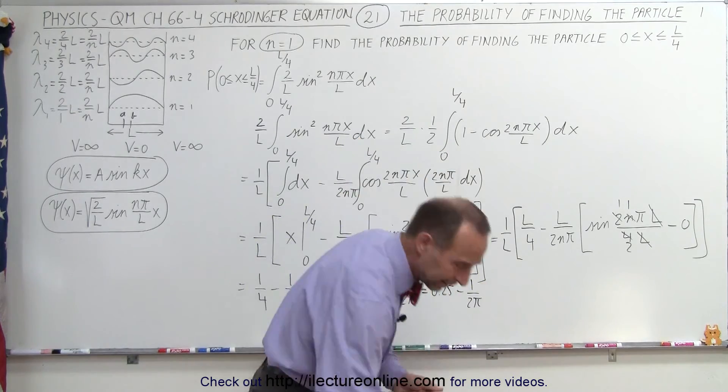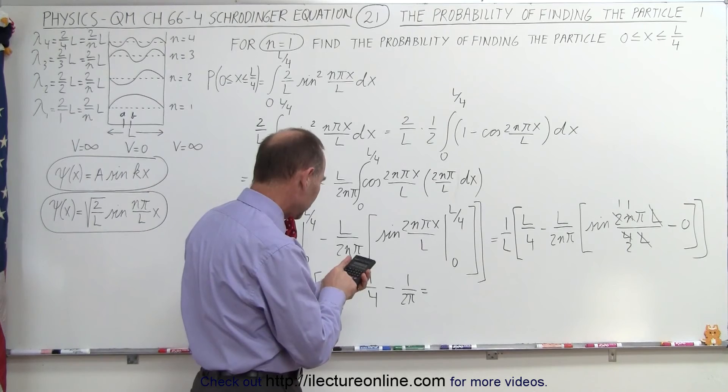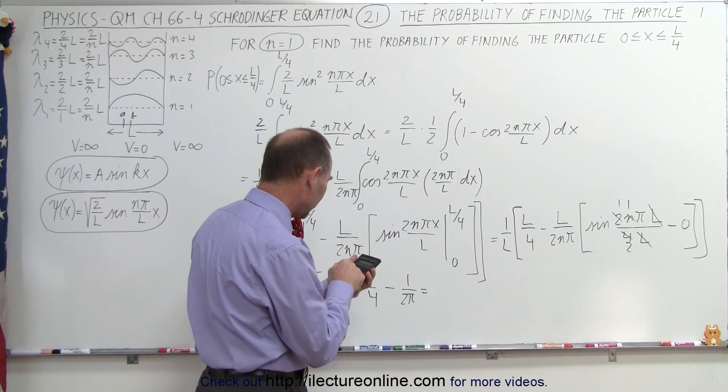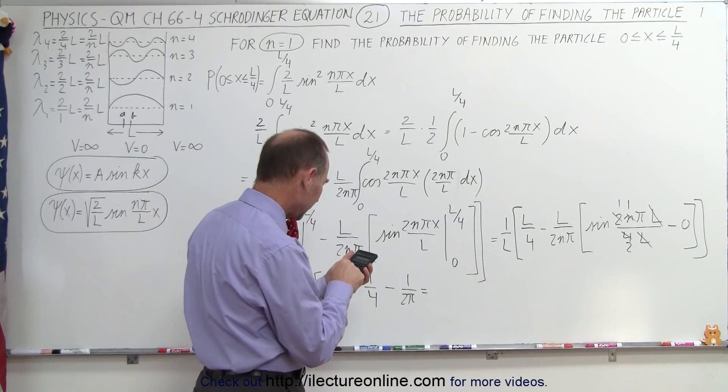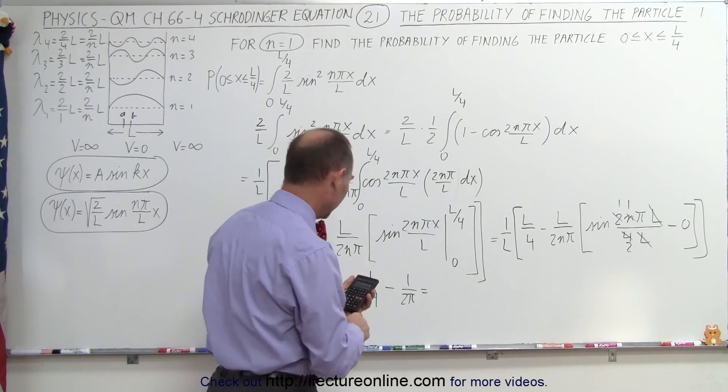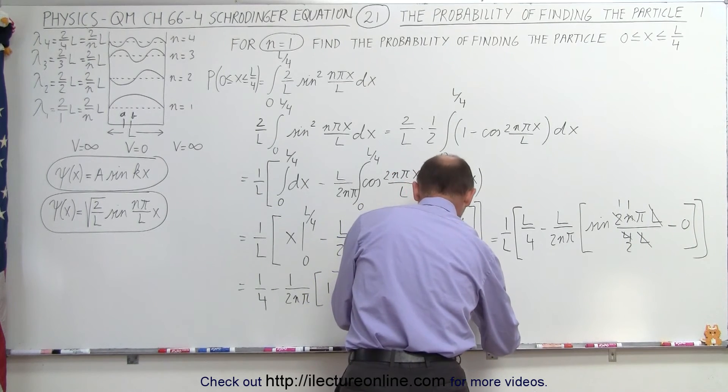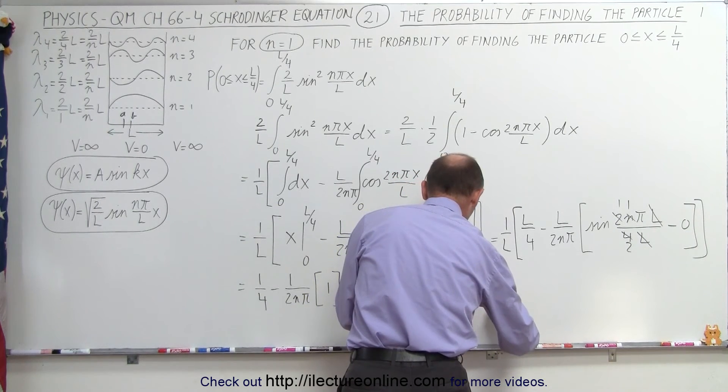Of course, with a calculator, we can figure out what that is equal to. 0.25 minus the quantity 1 divided by 2 times pi equals, and I guess there's a probability of 0.0908.